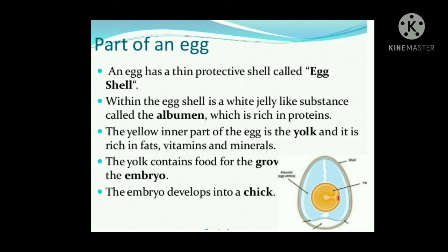Children, you also need to understand the parts of an egg. An egg has a thin protective shell called the egg shell, the white outer covering. Within the egg shell is a white jelly-like substance called the albumen, which is rich in protein. The yellow inner part of the egg is the yolk, and it is rich in fats, vitamins, and minerals. The yolk contains food for the growth of the embryo. The embryo develops into a chick, that is the baby bird.